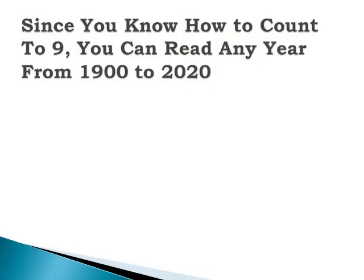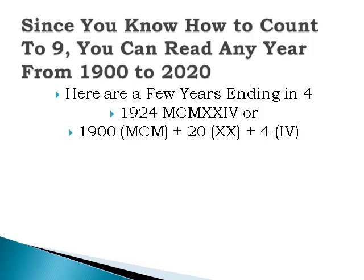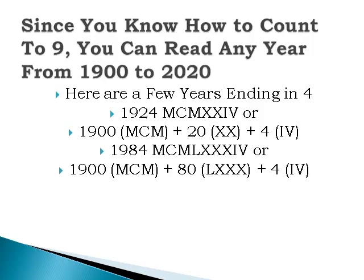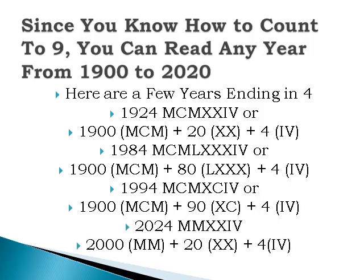Since you know how to count to 9 already, you can read any year from 1900 to well past 2000. Here are a few years ending in 4: 1924 is MCMXXIV — that's MCM for 1900, XX for 20, and IV for 4. 1984 is MCMLXXXIV — MCM for 1900, LXXX for 80, and IV for 4. 1994 is MCMXCIV — 1900 plus XC for 90, plus IV for 4. And 2024 is simply MMXXIV — MM for 2000, XX for 20, plus IV for 4.